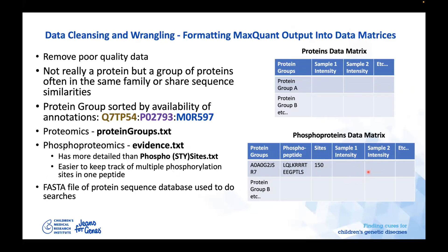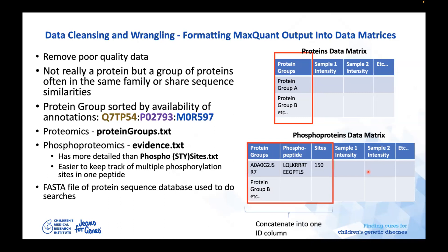I also need the FASTA sequence file that the searches were performed against. For the protein data matrix, the UniProt accessions form the sample protein ID. For phosphopeptides, you can concatenate the relevant columns into one column, giving you the same data shape that can be used in the same script.